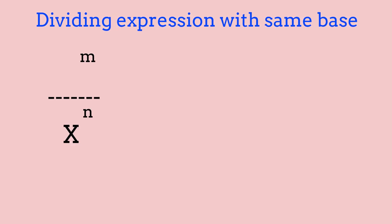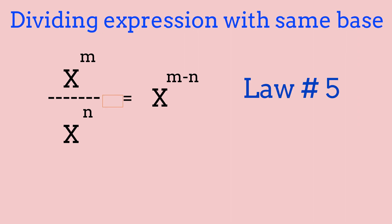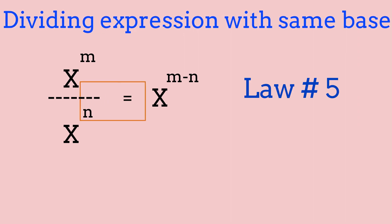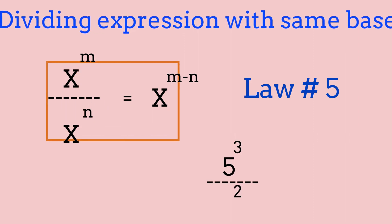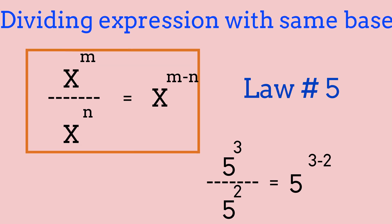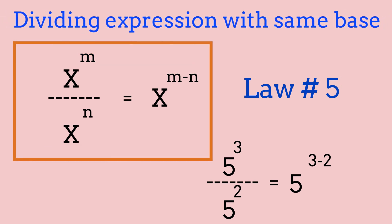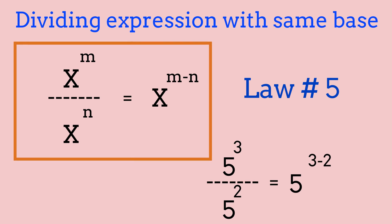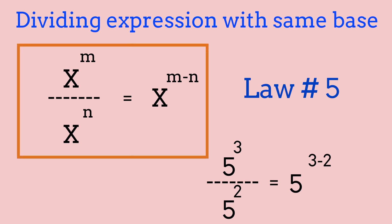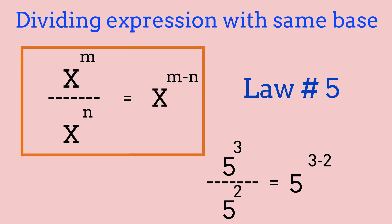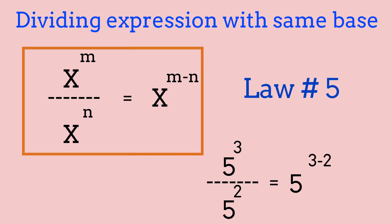Now we're going to be going over dividing expressions with the same base — law number 5. For example, 5 to the power of 3 divided by 5 to the power of 2: since they're the same base, all we have to do is write 5 to the power of 3 minus 2. So all we need to do is subtract the exponents. That is law number 5 for dividing with the same base.